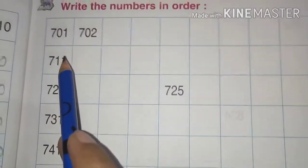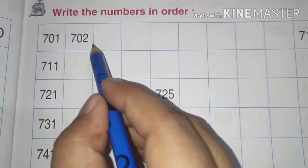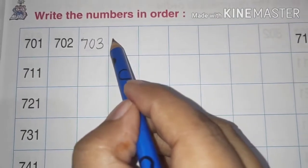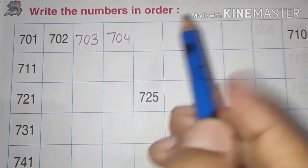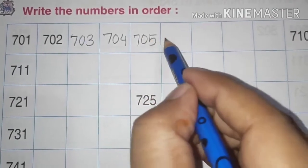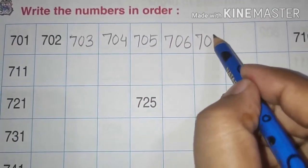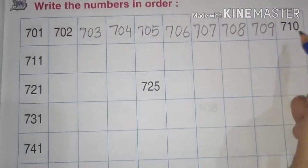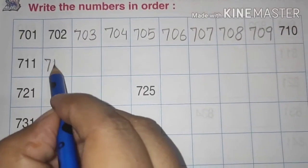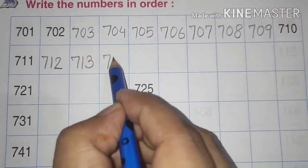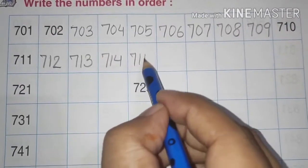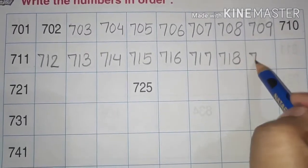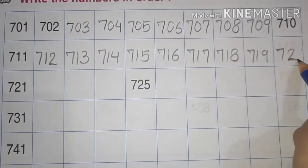Here we have first 701 and then 702. After 702 we will write 703, 704, 705, 706, 707, 708, 709, 710. Okay, 711, 712, 713, 714, 715, 716, 717, 718, 719, 720.